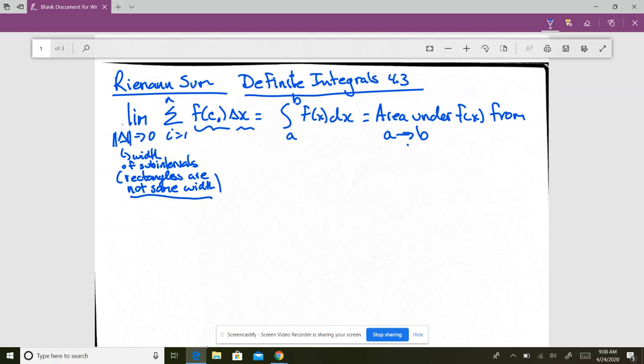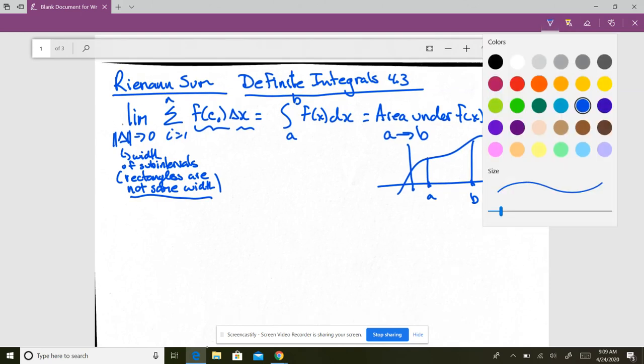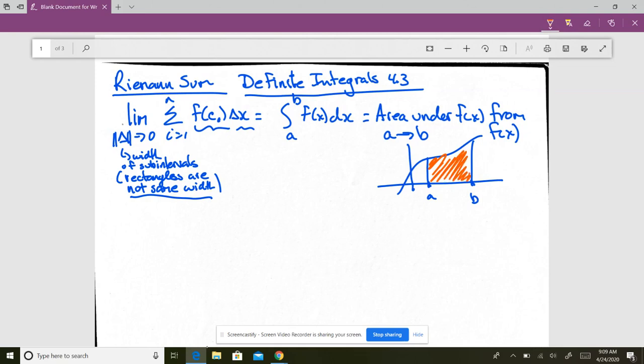So graphically what that means is if this is your f of x, and this is a, and that's b, this integral represents that area. It's always back to the x-axis. So in short, the integral from a to b of x equals the area under the curve of f of x between a and b. That's what an integral is.